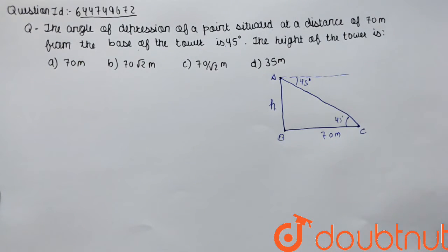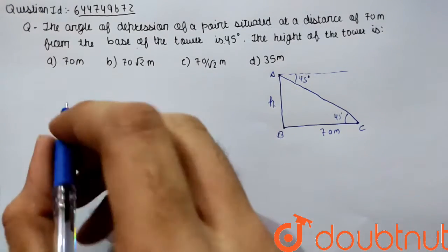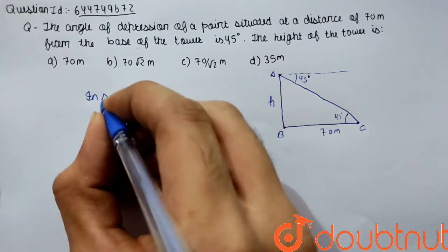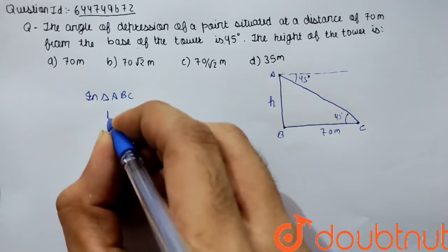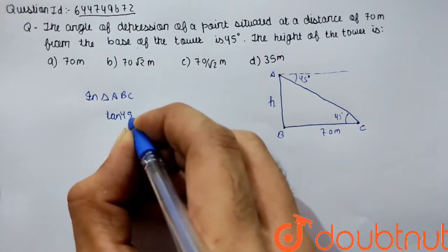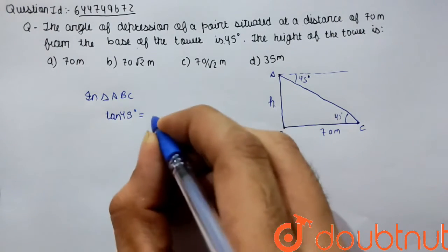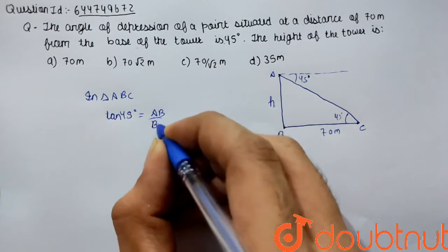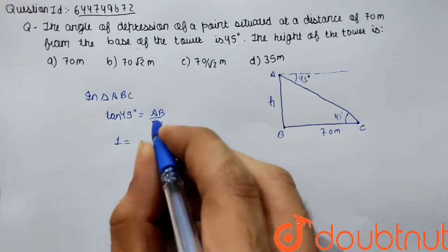Let's mark it as C. So in triangle ABC, I can apply tan 45, as the angle is 45 degrees, which is perpendicular upon base: AB upon BC. Tan 45 is 1.